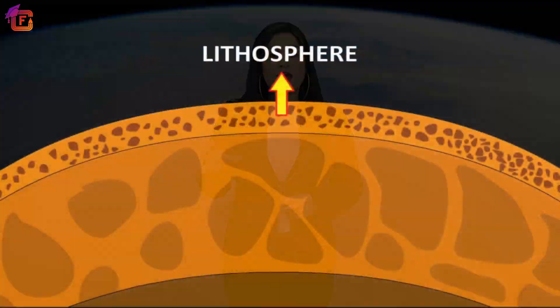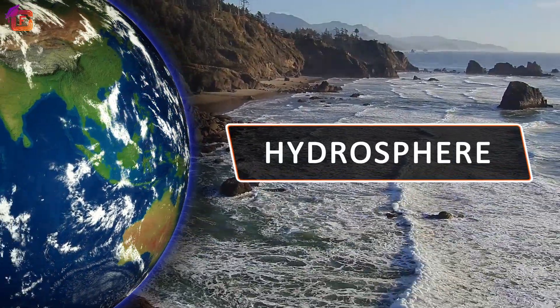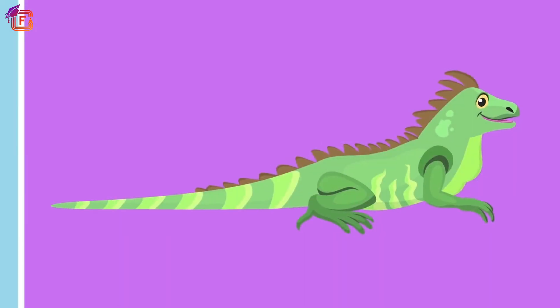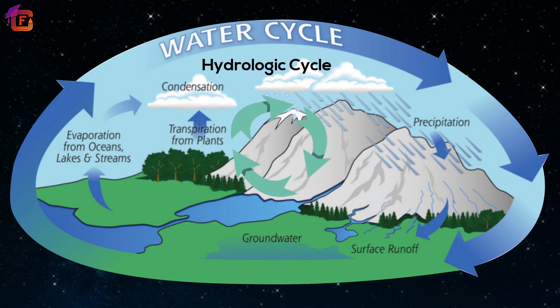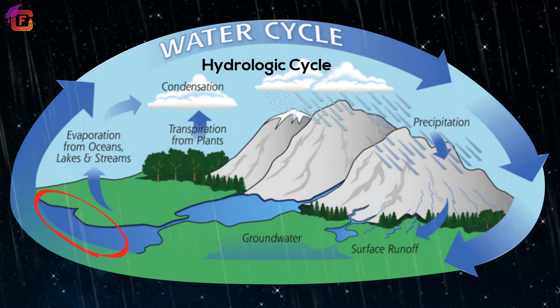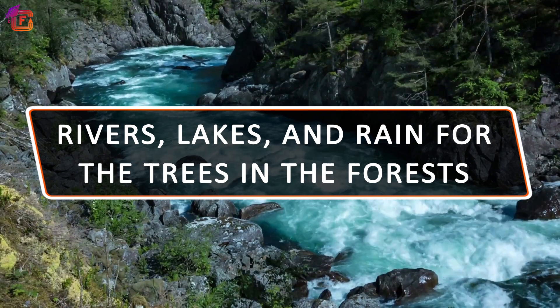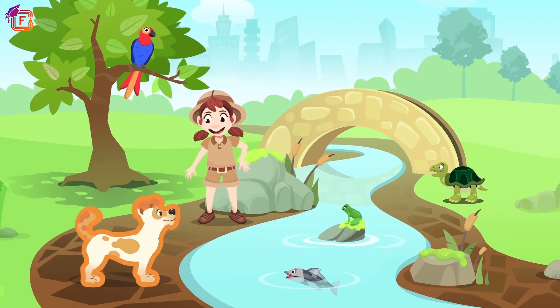The lithosphere interacts with water in the oceans, or with the hydrosphere, at the coastlines, and these places are teeming with life — for example birds, fish, invertebrates, and mammals. The land of the lithosphere also interacts with the air of the atmosphere. Due to the hydrological cycle, warm air rises and forces the clouds to drop their water in the form of rain, snow, etc., which results in the filling up of rivers, lakes, and rain for the trees in the forests. All these interactions help in the survival of the living world.